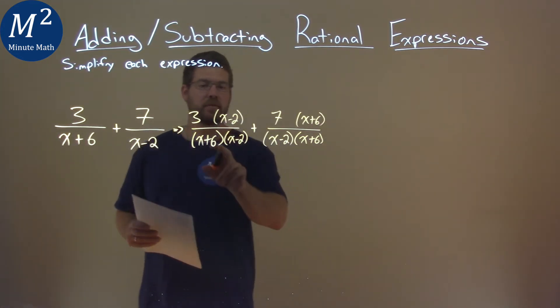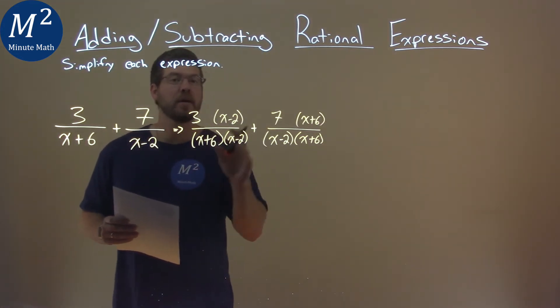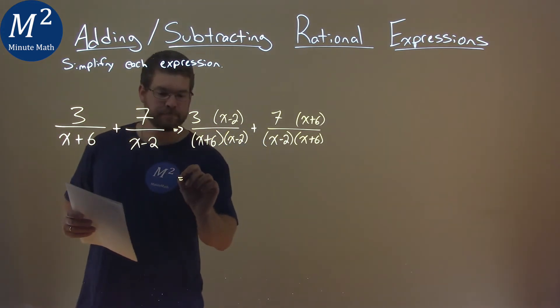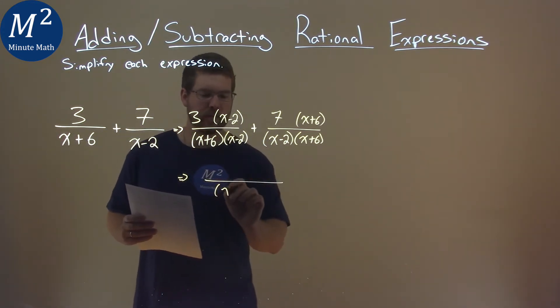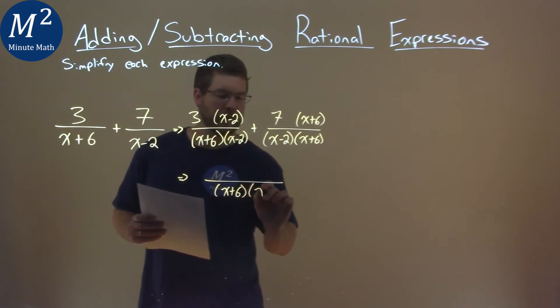What this now allows me to do is we have the same base, so we can add these fractions. So we make one big fraction now, the x plus 6 times the x minus 2,